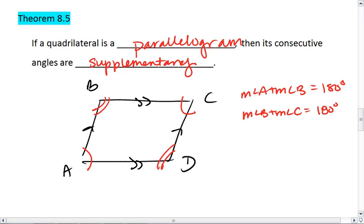C is supplementary to D. Measure of angle C plus measure of angle D equals 180. And D is supplementary to A. The measure of angle D plus the measure of angle A equals 180.